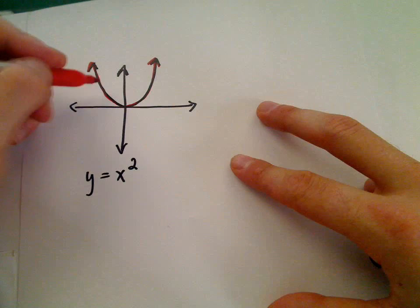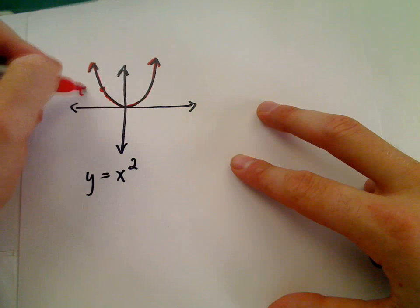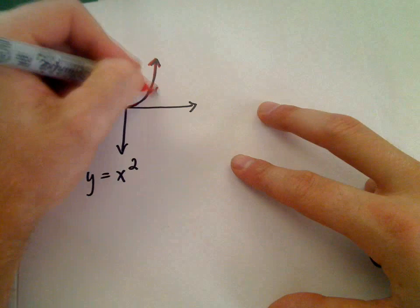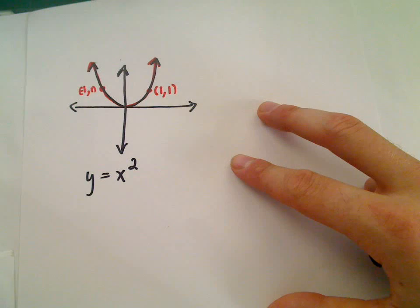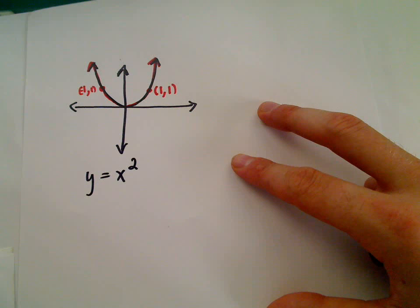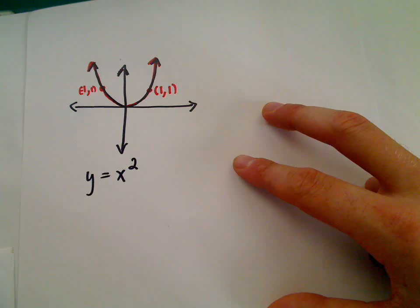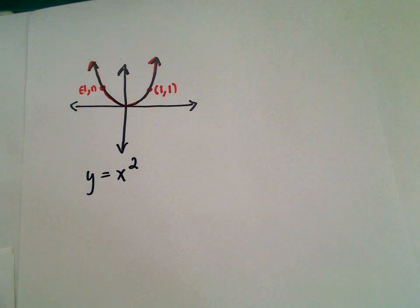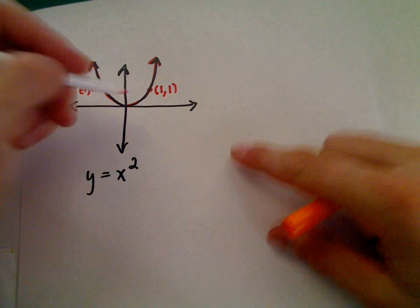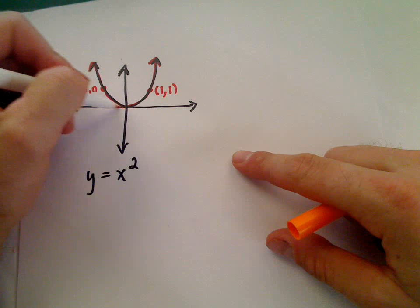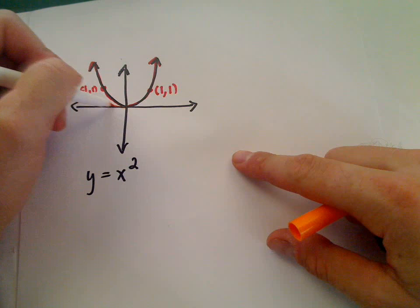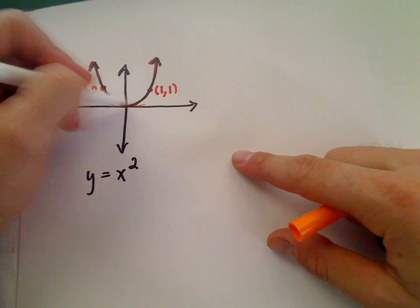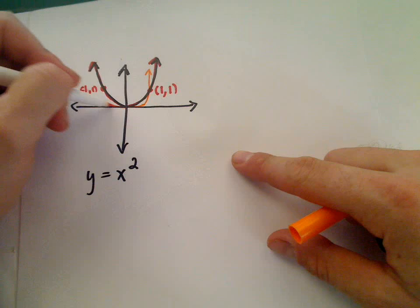Notice if you plug one in for x, you get one out for y. Excuse me, negative one there. Likewise, if you plug one in for x, you get positive one out for y. If you graph a function that's any even power, it's going to look very similar to this graph, except it'll be a little flatter between zero and one, but then it'll get steeper after that.